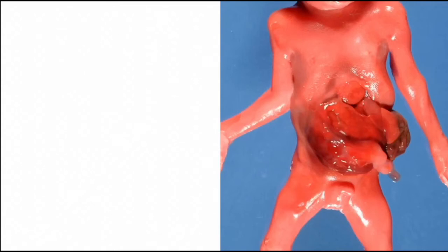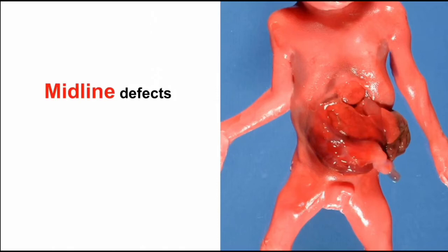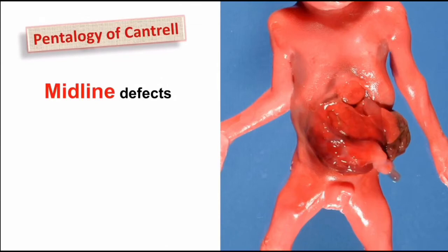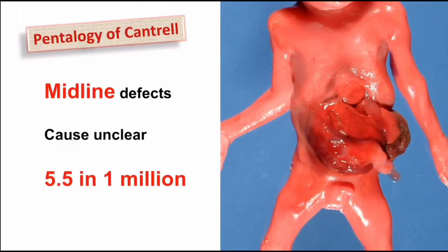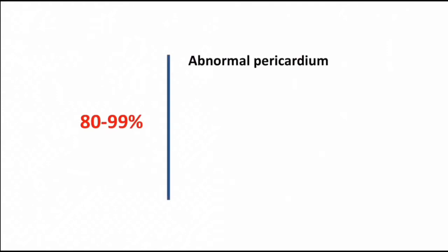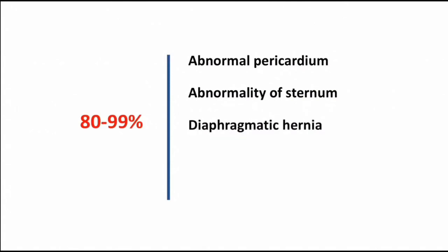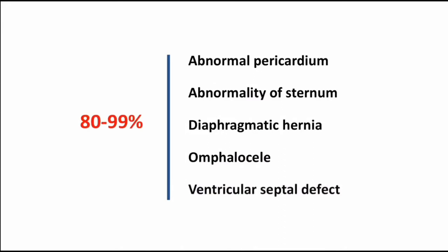In this picture a baby is born with ectopia cordis along with other midline defects. From the lower end of the sternum up to the umbilicus, the anterior body wall is defective — this is known as pentalogy of Cantrell. The cause is sometimes attributed to genetics but remains unclear. About 5.5 babies per million are born alive with this condition. In 80–99% of cases, pentalogy of Cantrell shows the following features: abnormal pericardium, abnormality of the sternum, diaphragmatic hernia, omphalocele, and ventricular septal defect.